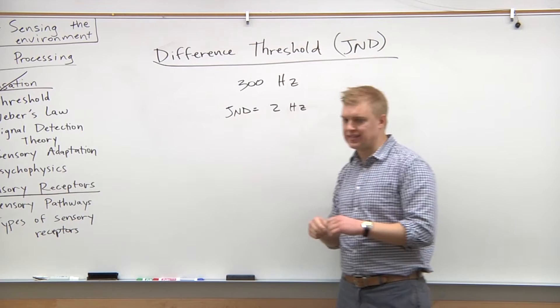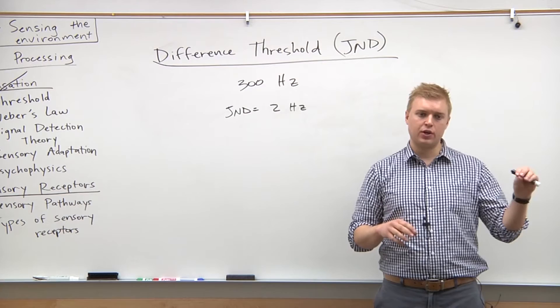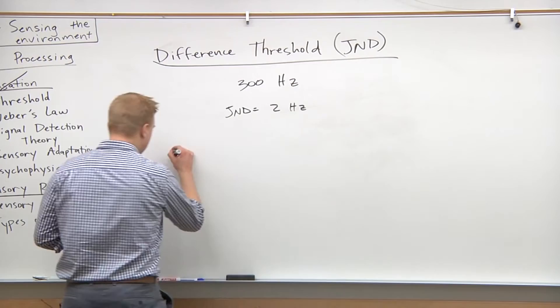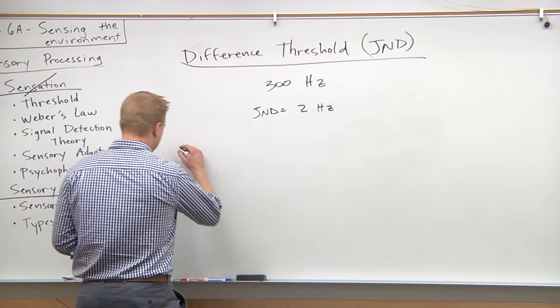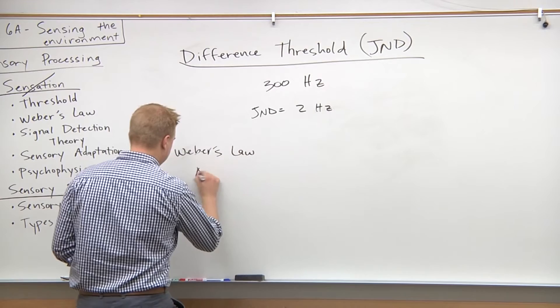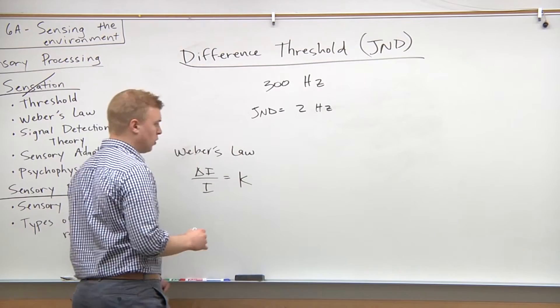We want to find what the constant is, and this is where we introduce Weber's Law. Weber's Law states that there's a constant ratio between the difference threshold and the original stimulus. So written out, that looks like - we got Weber's Law, which has the difference threshold over the original stimulus is going to equal k, which is the Weber's constant.